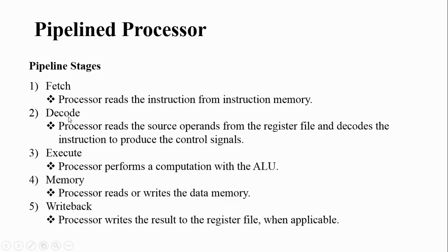In the execute stage, the processor performs a computation with the ALU — whatever operation you want to perform, that will be done by the ALU in the execute stage. In the memory stage, the processor can read or write the data memory, so if you want to access data memory for read or write operation, that will be done in the memory stage. The final stage is the write back stage, where the processor writes the result back to the register file. So register file will be read in the decode stage and written in the write back stage whenever applicable.